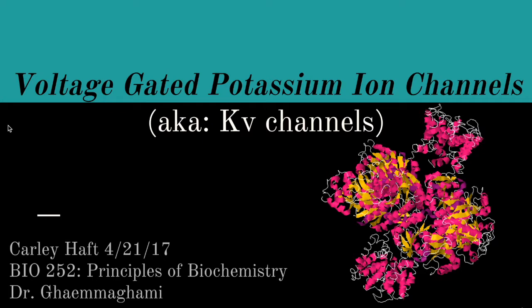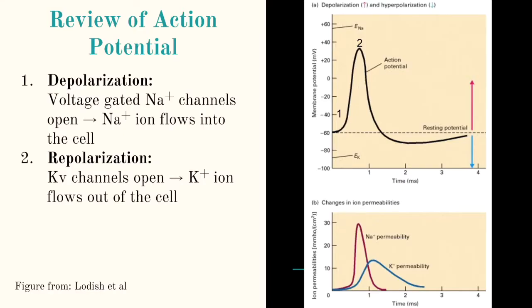The voltage-gated potassium ion channel, or the KV channel, is a protein involved in the conduction of action potential. Before I get into the important structural features of this protein, I wanted to do a brief review of action potential.